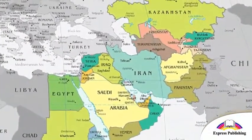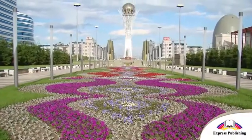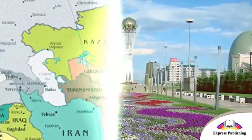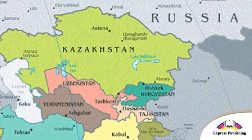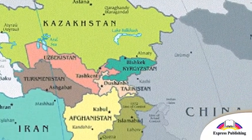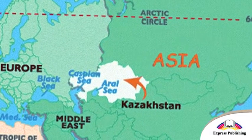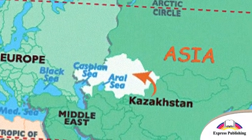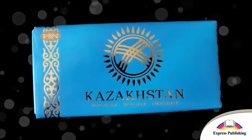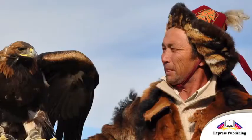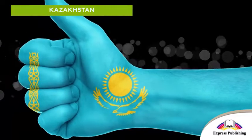It is one of the largest countries in the world. Its capital city is Astana. This city is close to Russia to the north and China to the east. Part of Kazakhstan is in Europe and the rest is in Asia. Kazakh and Russian are the official languages. The people are Kazakhstani. This is Kazakhstan.